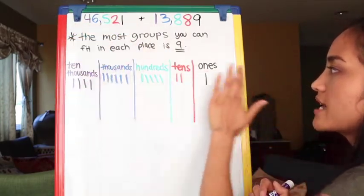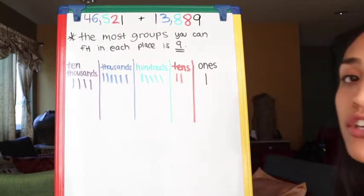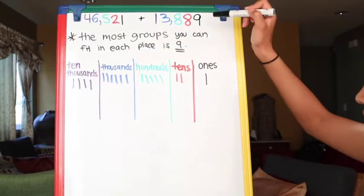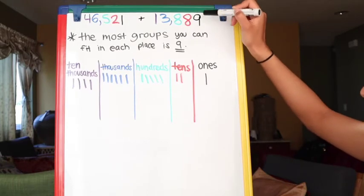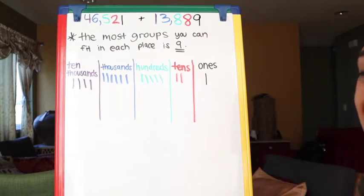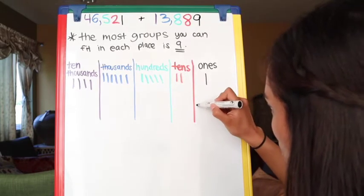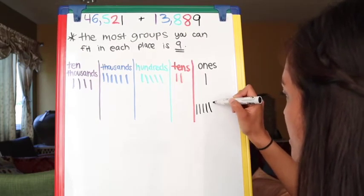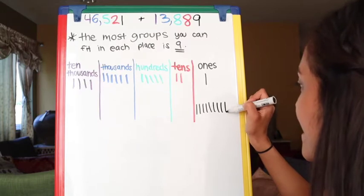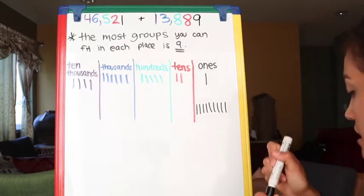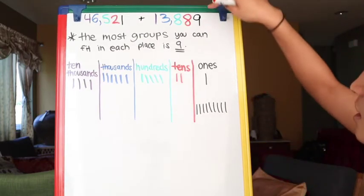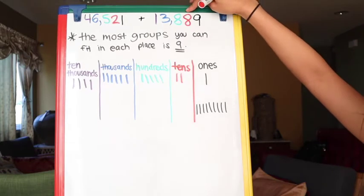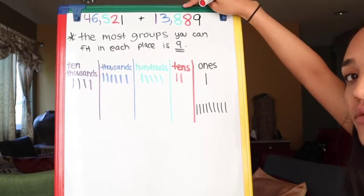Awesome, we just represented this number over here on our place value chart. Let's move on to the next number. Already looking at the ones place, looks like we have nine — one, two, three, four, five, six, seven, eight, nine. Moving on over to the tens — how many groups of tens do we have? We have eight.